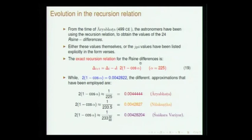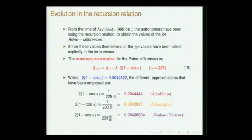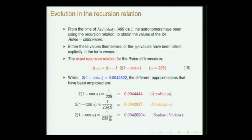To summarize: the recursion relation to obtain the sine table has the proportionality constant 2(1 − cos alpha). This has been written as 1/225 by Aryabhata. Nilakantha gives this factor to be 1/(233 and a half) — 'Sardha Deva Shvibhi.' Shankara Variyar further improves upon this, saying 223 degrees and 32 vikalas. The modern value is approximately 2.42822 (×10⁻⁵), and these are successively better approximations than Aryabhata's original value.